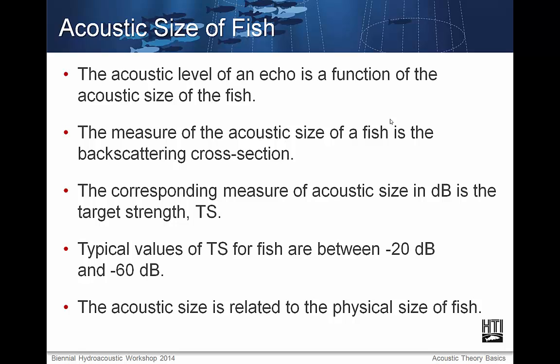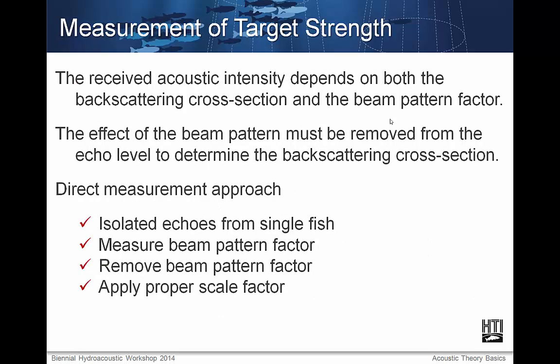The acoustic level of an echo is a function of the acoustic size of the fish. The measure of the acoustic size of a fish is the backscattering cross section. The corresponding measure of acoustic size in dB is the target strength, or TS. Typical values for TS for a fish are between minus 20 dB and minus 60 dB, and the acoustic size is related to the physical size of the fish. The received acoustic intensity depends on both the backscattering cross section and the beam pattern factor. The effect of the beam pattern must be removed from the echo level to determine the backscattering cross section — this is done automatically in HTI systems.